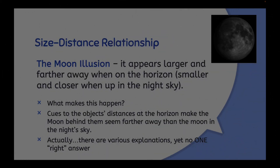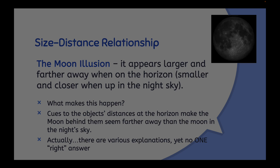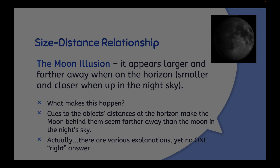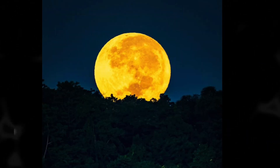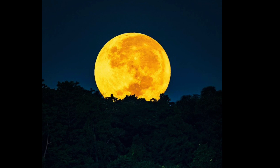Cues to the objects' distances at the horizon make the moon behind them seem farther away than the moon in the night sky. There are various explanations, yet no one has the correct answer. A harvest moon is super orange and super giant, and it occurs around the time of autumn. You'll see it around Halloween where it looks like a big orange glowing plate in the sky, almost as if it's sitting on top of the trees and houses around you.